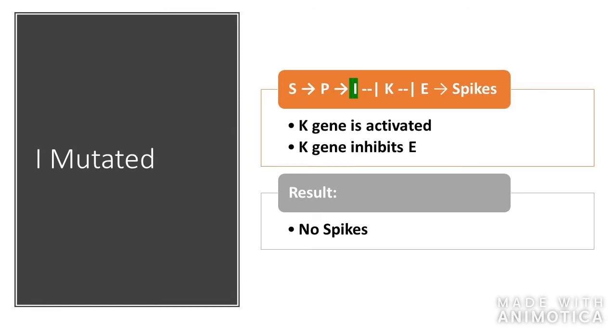For the I mutation, with I being gone, the K gene is activated. K gene then inhibits the E gene, therefore preventing it from making spikes, leaving us with smooth cells.